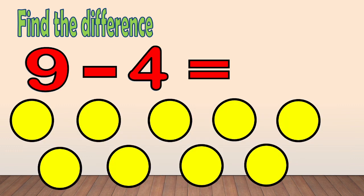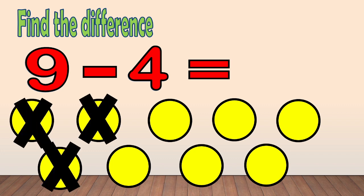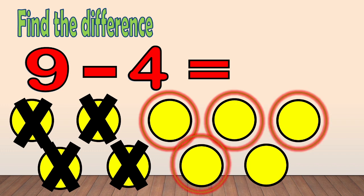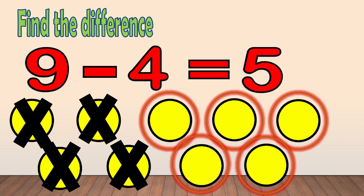Another one: 9 minus 4. Here, we have 9 circles. And then, we are going to take away 4 circles. When we take away, we cross the circles: 1, 2, 3, 4. Now, let's count how many are left: 1, 2, 3, 4, 5. So, the answer is 5. 9 minus 4 equals 5.